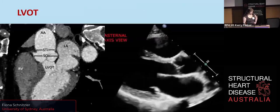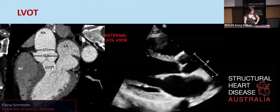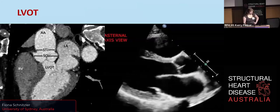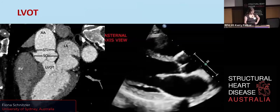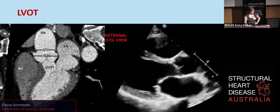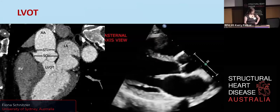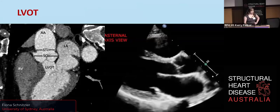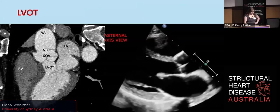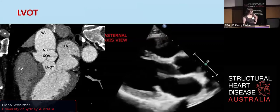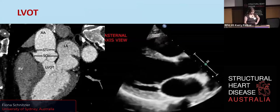Blood flows out via the LV outflow tract, which is a short distance just below the aortic valve. This is made up by the interventricular septum on one side, and on the other side the fibrous base of the anterior mitral leaflet, which is part of the aortic mitral curtain. The LV outflow tract is particularly important in echocardiography because this is where we can estimate cardiac output. You can see in this moving image the hinge point of the mitral valve, made possible by the 135 degree angle of the valves, which gives us our estimation of cardiac output.